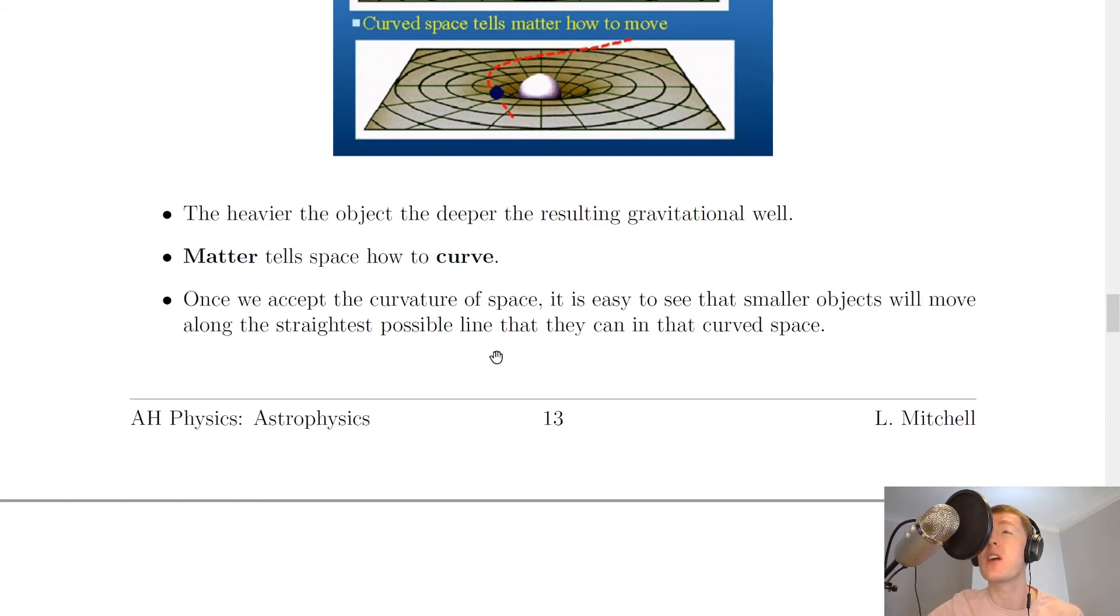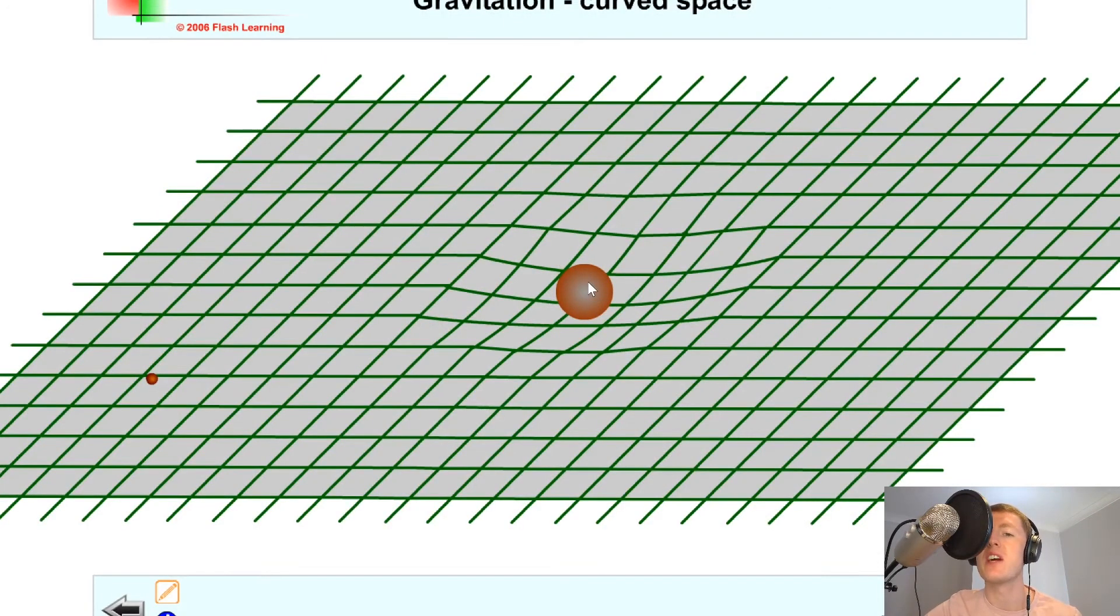It then goes on to say that once we accept the curvature of space, it is easy to see that smaller objects will move along the straightest possible line that they can in that curved space. And just to help you visualize this, I'm going to show you an animation.